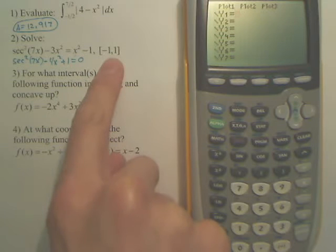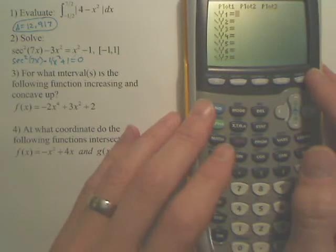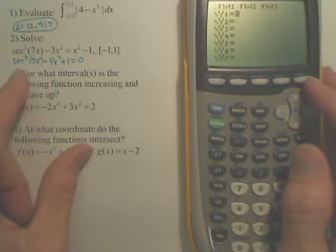I have an interval here because there's multiple answers, and if I don't have an interval, you'd have a whole bunch. Okay, so we type it, and here's where it gets hard.